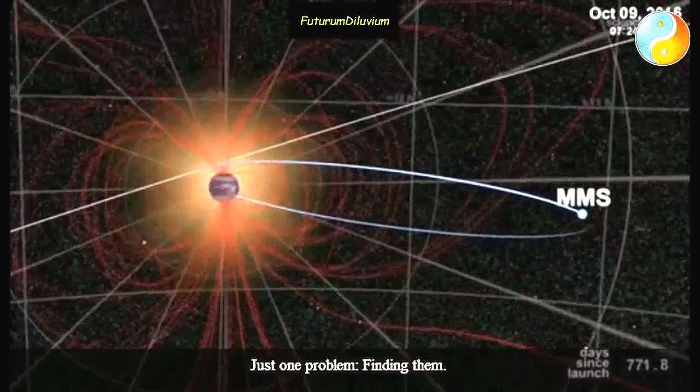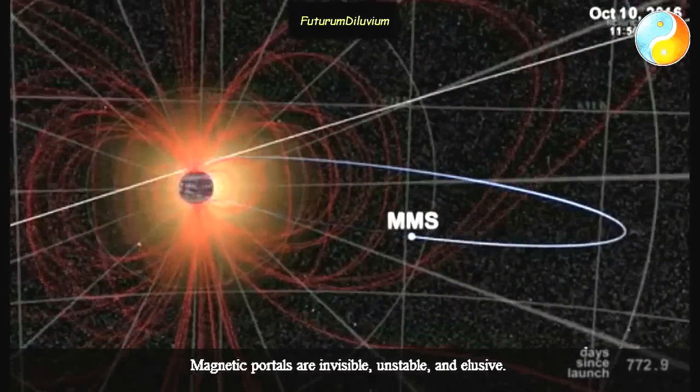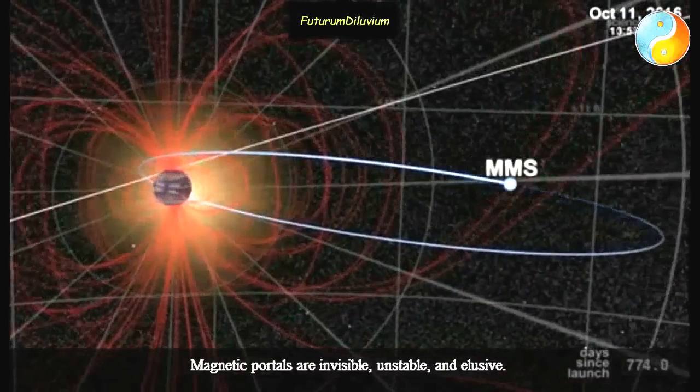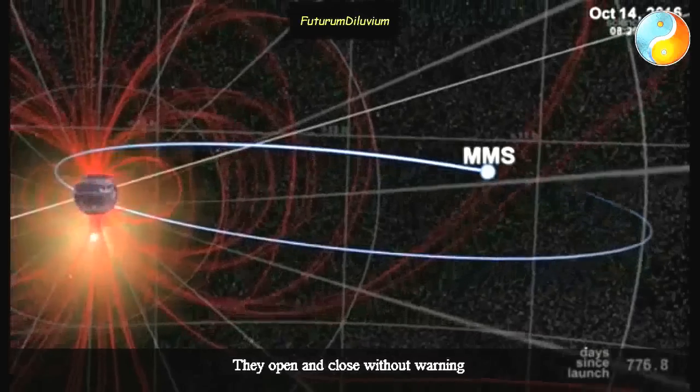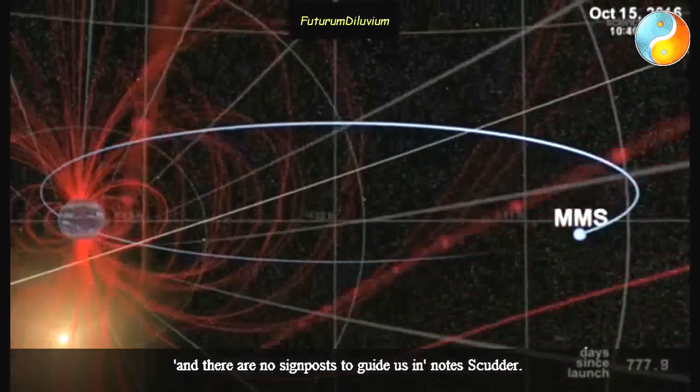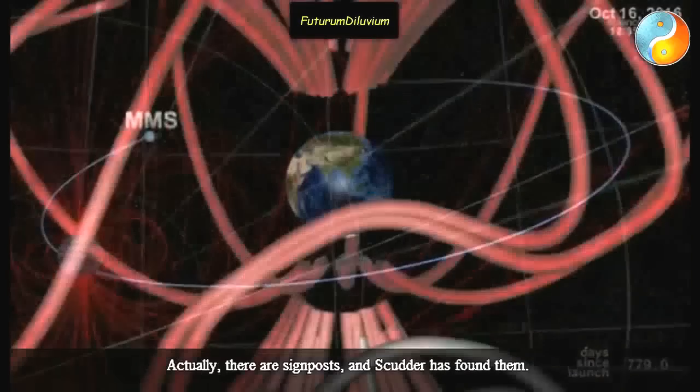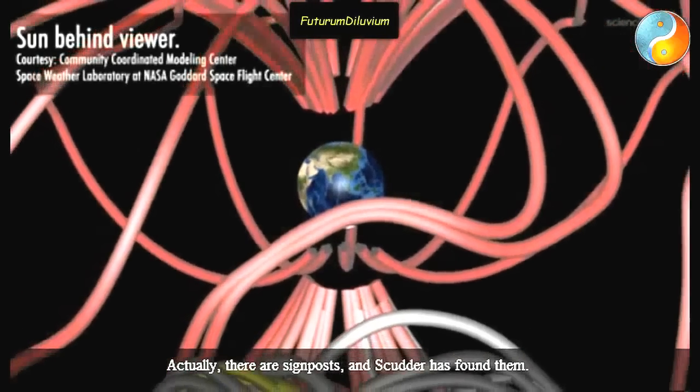Just one problem: finding them. Magnetic portals are invisible, unstable, and elusive. They open and close without warning, and there are no signposts to guide us in, notes Scudder. Actually, there are signposts, and Scudder has found them.